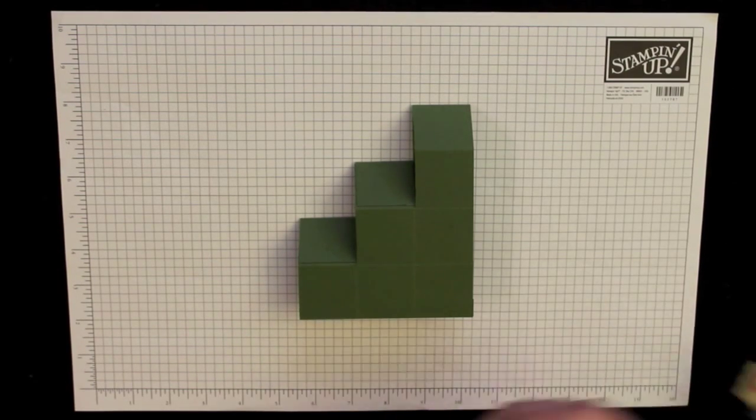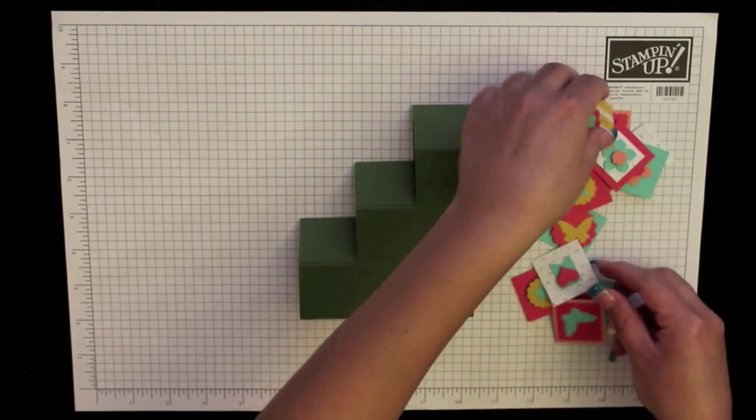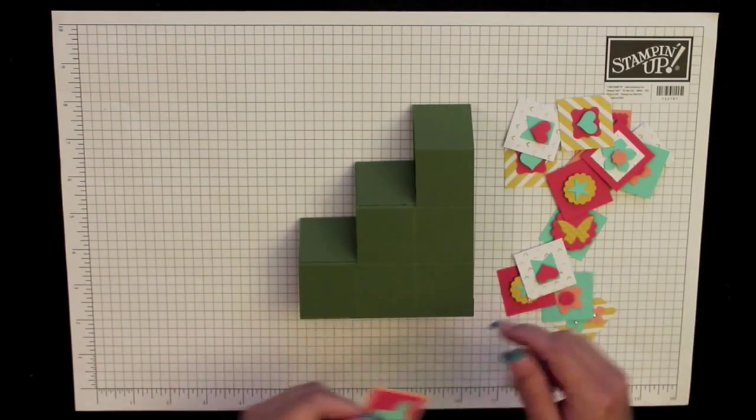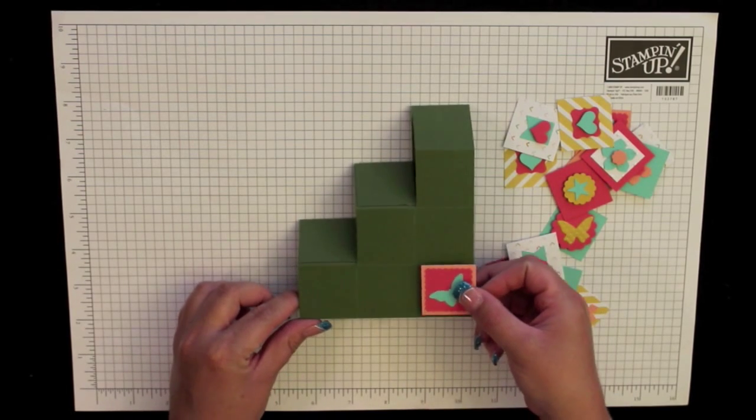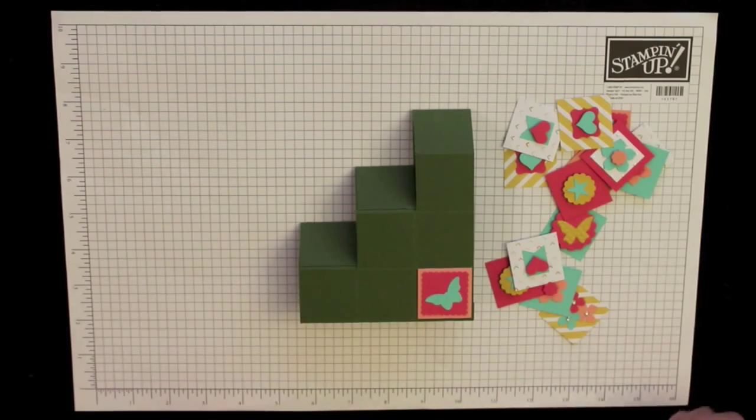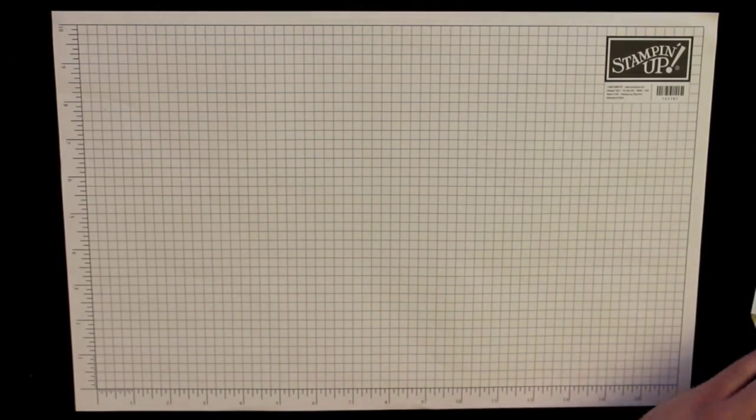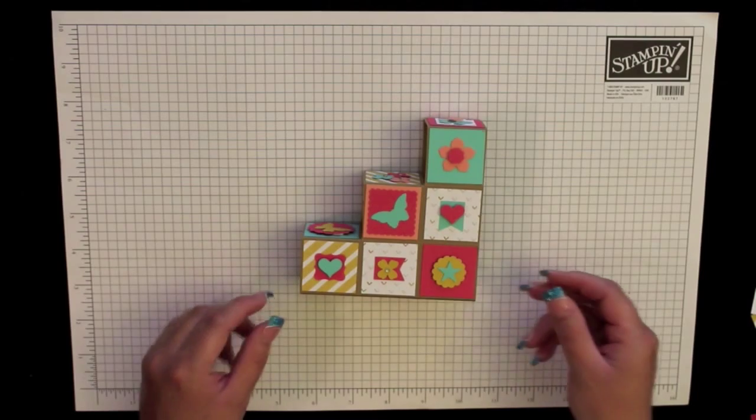I already have mine done. Each one of these is 1 3/8 inch and it fits perfectly inside each one of these little squares which is 1 1/2 inches. So decorate them however you'd like, go ahead and adhere them in place and once you're done, your card will look like this.